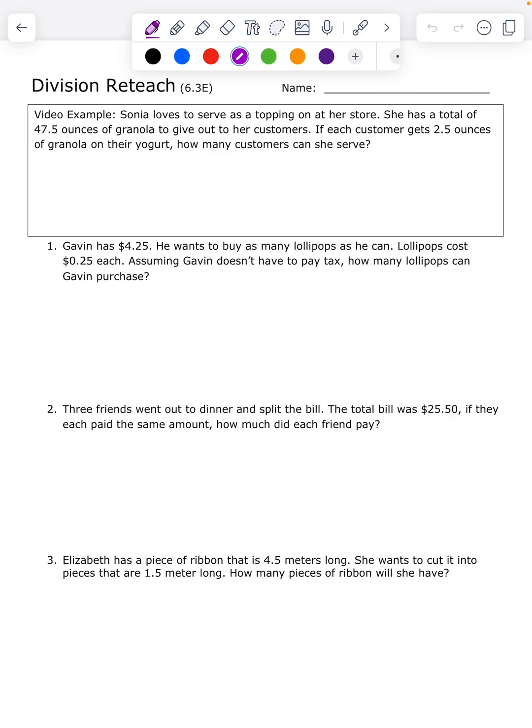So it says Sonia loves to serve as a topping at her store. That doesn't make sense. She has a total—I'm guessing she loves to serve granola as a topping. I forgot to type the word granola. Sorry about that, guys. She has a total of 47.5 ounces of granola. So it graciously tells us that this is the total. So I'm going to box it and I'm going to label it as total.